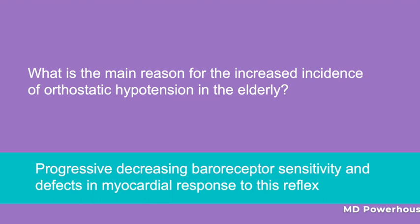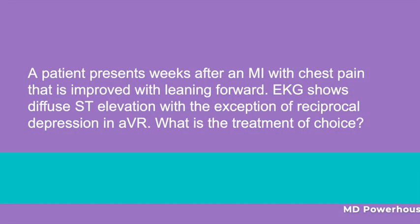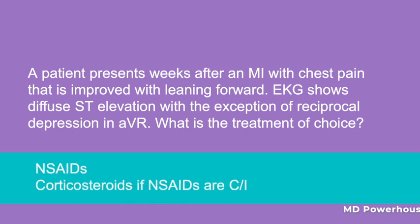A patient presents weeks after an MI with chest pain that is improved with leaning forward. EKG shows diffuse ST elevations with the exception of reciprocal depression in AVR. What is the treatment of choice? NSAIDs, and if NSAIDs are contraindicated, then give corticosteroids.